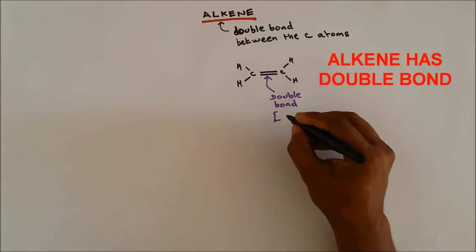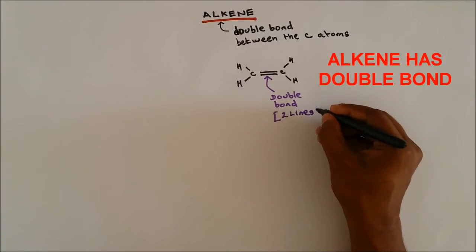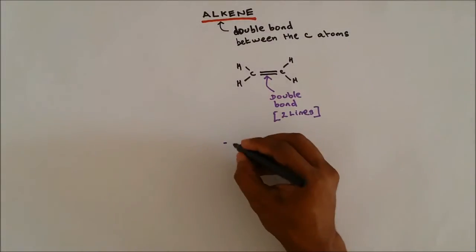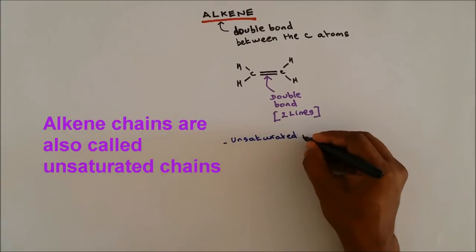The double bond is shown using two lines. Since it contains a double bond, it is called an unsaturated molecule.